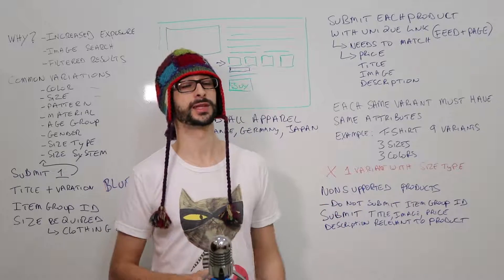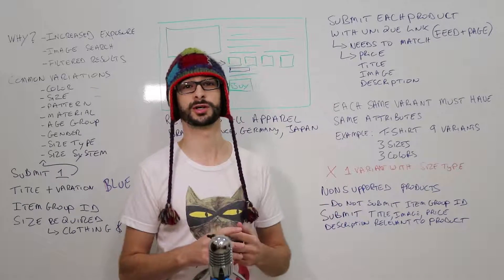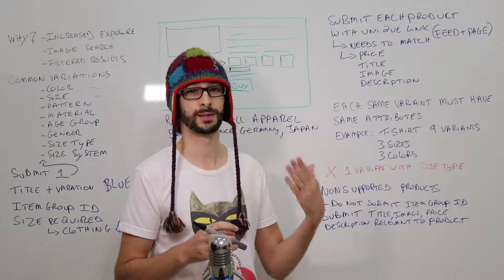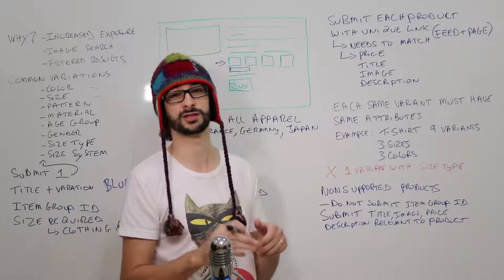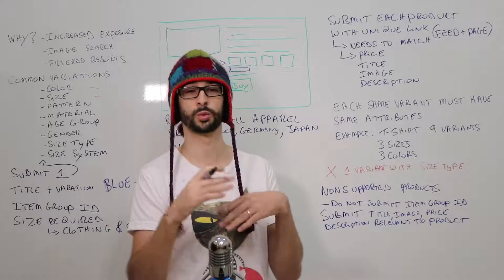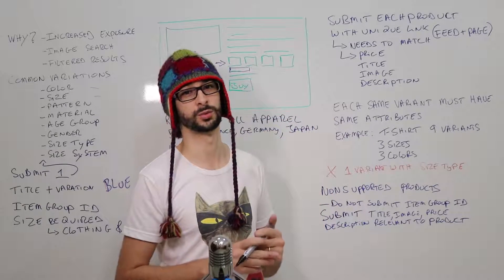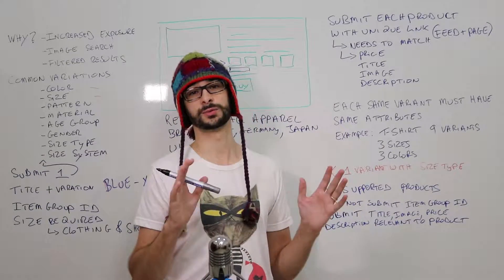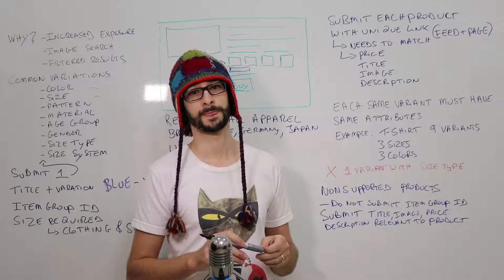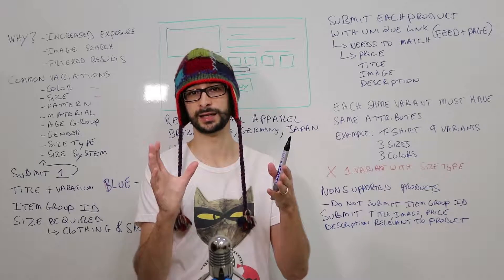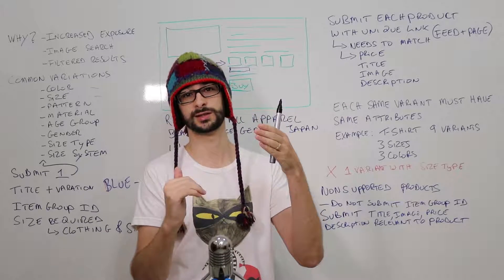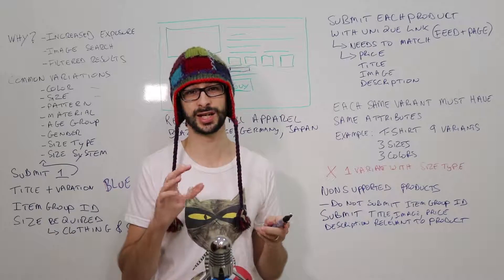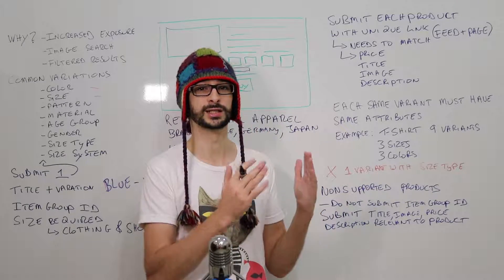Now the technical aspect of submitting variants — some merchants get caught up on this. When you submit a product you need to submit one listing per product variant. So if you're submitting yellow, black, and blue, you have to submit each individually. You cannot submit one product and list all the variants with an attribute — you have to separate them all into individual product listings. The landing page however needs to be identical to the product that is submitted, so you need a unique URL for each individual product.